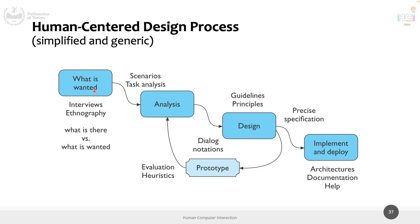We won't follow any specific one of those frameworks. Instead we take the common denominator: a simplified generic process whose steps are present in all of them. In this course we'll follow: need finding, analysis of needs, low-fidelity prototype design, heuristic evaluation, adapting the design, then a second prototype with a user evaluation. We do two complete iterations at two levels of prototype fidelity — the final product stage is beyond this course.